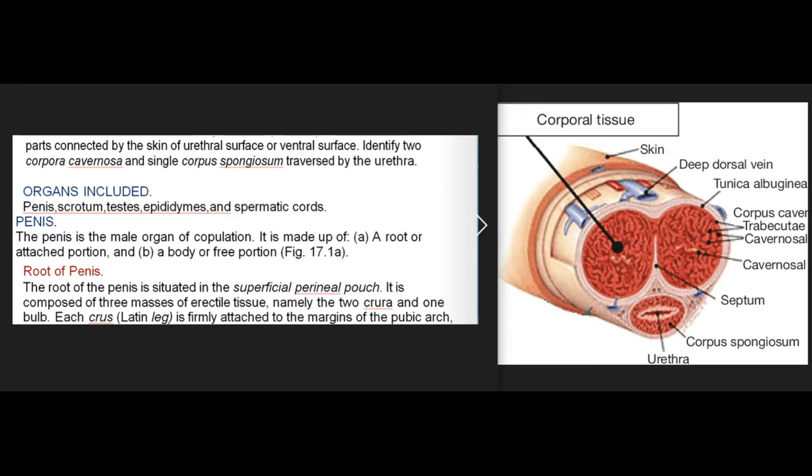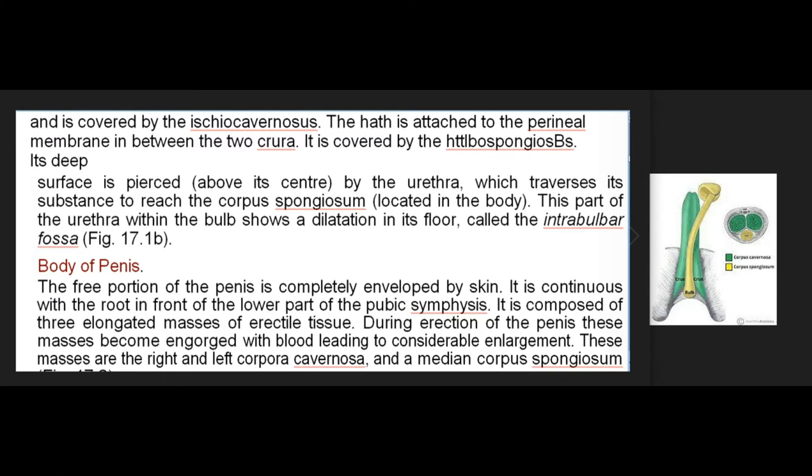Root of Penis: The root of the penis is situated in the superficial perineal pouch. It is composed of three masses of erectile tissue, namely the two crura and one bulb. Each crus (Latin: leg) is firmly attached to the margins of the pubic arch and is covered by the ischiocavernosus. The bulb is attached to the perineal membrane in between the two crura, and is covered by the bulbospongiosus. Its deep surface is pierced, above its center, by the urethra, which traverses its substance to reach the corpus spongiosum located in the body. This part of the urethra within the bulb shows a dilatation in its floor called the intrabulbar fossa (Fig. 17.1b).